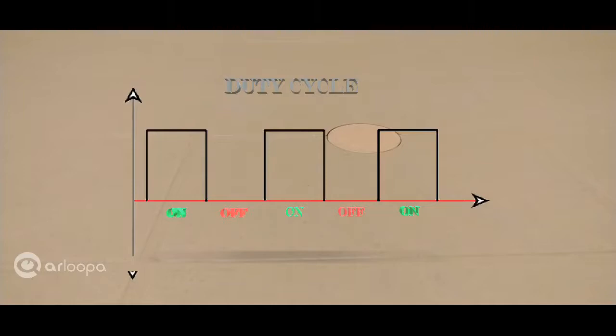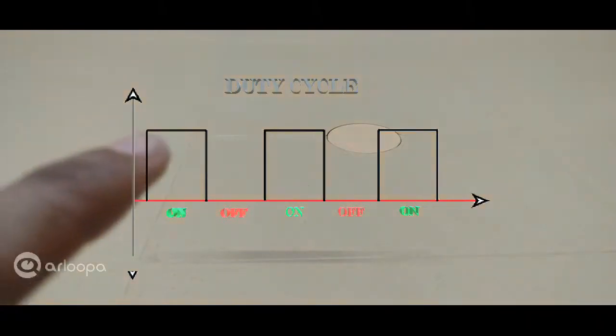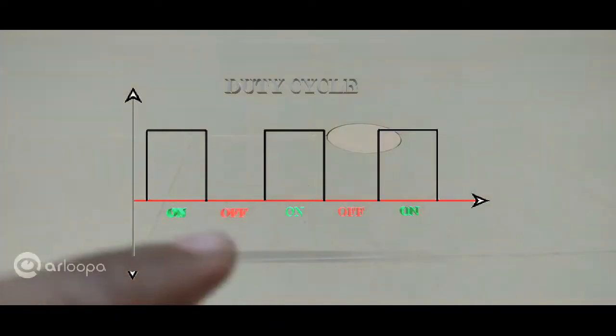Simply put, duty cycle is the percentage or amount of time where the signal is active with respect to the total time period. The time period is the amount of time it takes to complete one cycle. In this case, one cycle represents one on stage and one off stage. So, duty cycle is a percentage of time spent where the signal is on to the total time period.